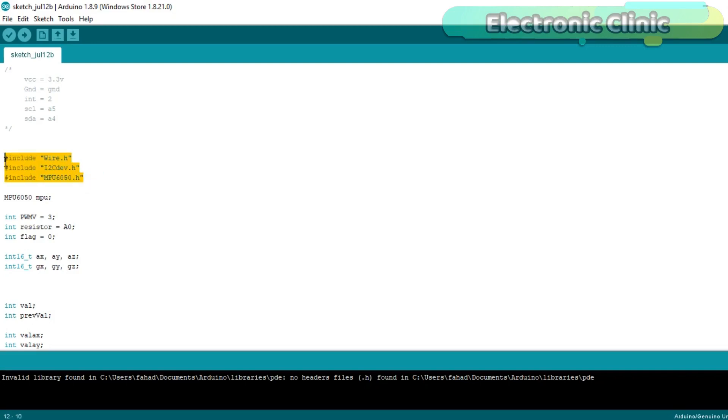Before you start the programming, first of all make sure that you download these libraries. These libraries are available on my website. You can find the link in the description. The MPU6050 GY-521 module can be powered up using 3.3 to 5 volts. The INT pin is connected with the Arduino's pin number 2. The SCL pin is connected with the analog pin A5, while the SDA pin is connected with the analog pin A4 of the Arduino.